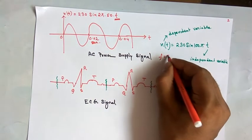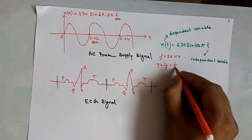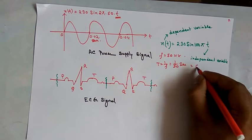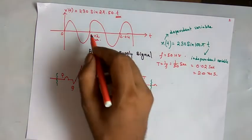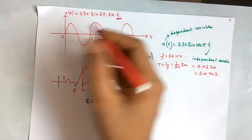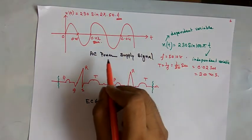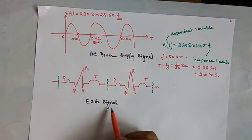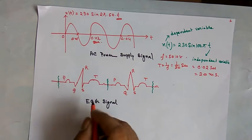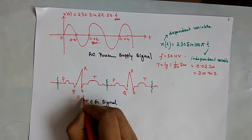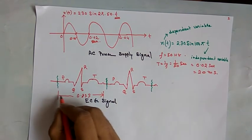Since the frequency f is 50 Hz, the time period T = 1/f = 1/50 = 0.02 seconds, or 20 milliseconds, for a complete cycle. So 0.02 seconds is one complete cycle and 0.01 seconds is the half cycle. This is a continuous-type AC power supply signal. Next we see the ECG signal — the electrocardiogram — with P, Q, R, S, T waves. It is a complex signal with a complete time period of 0.83 seconds.